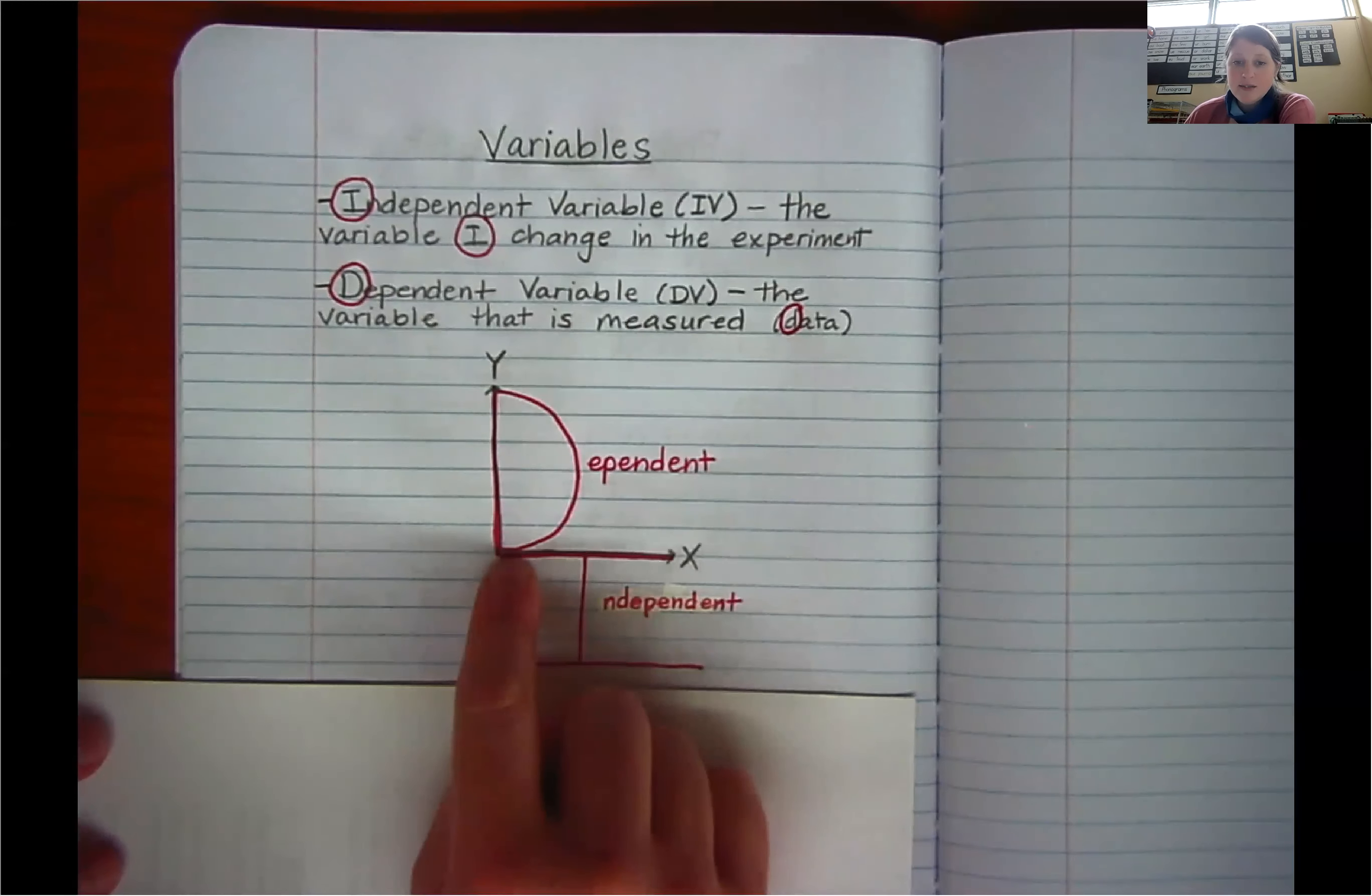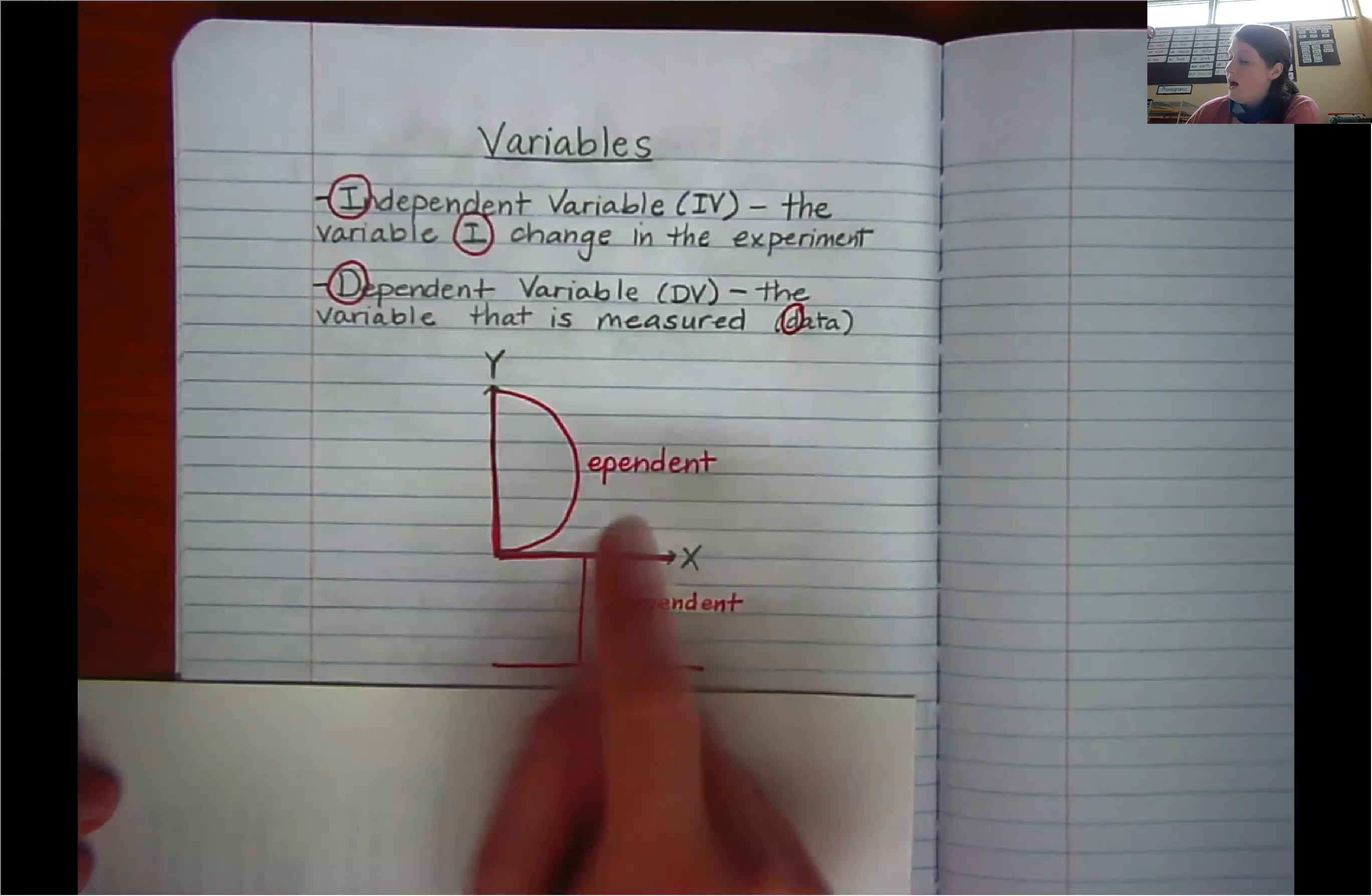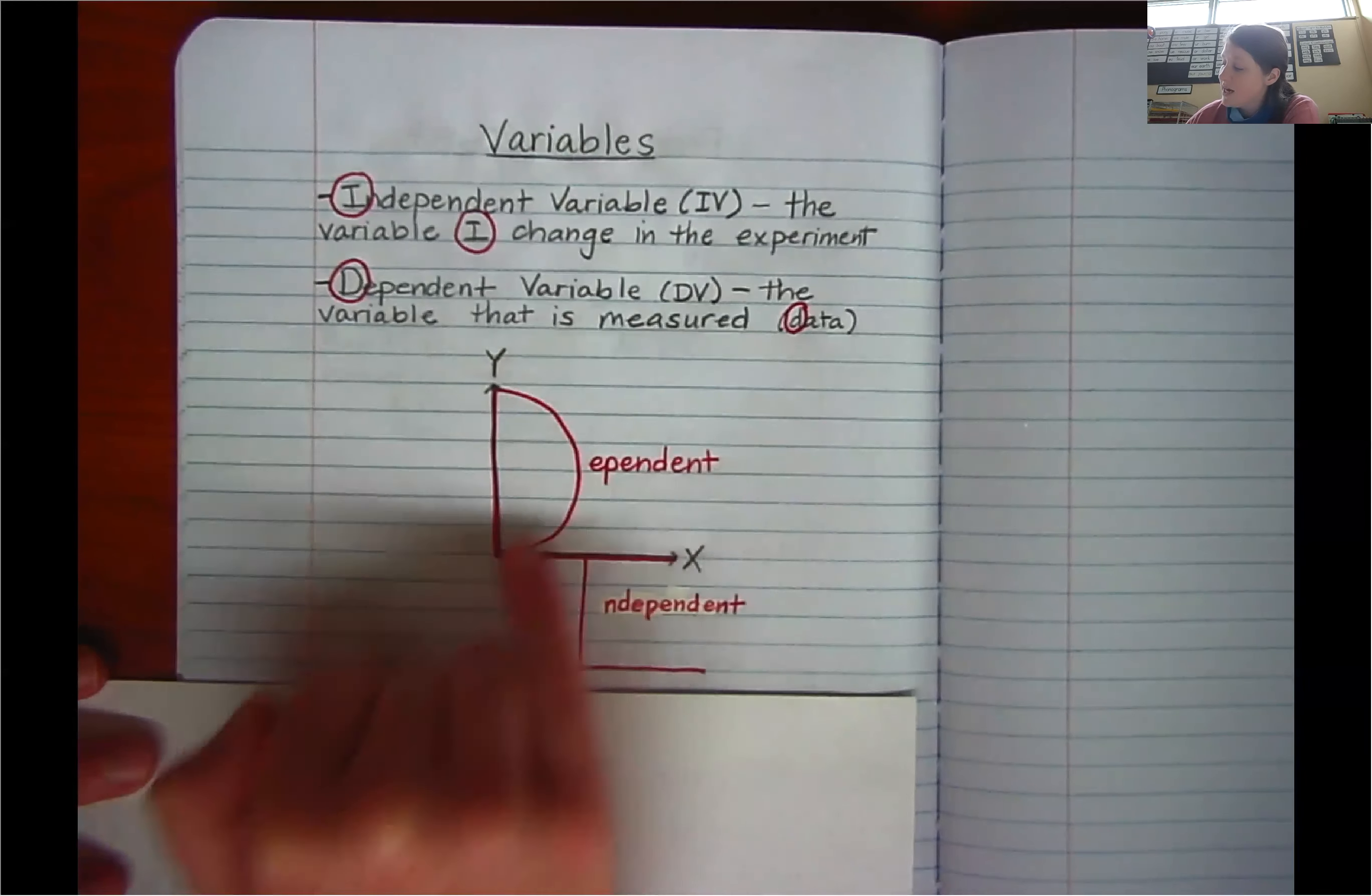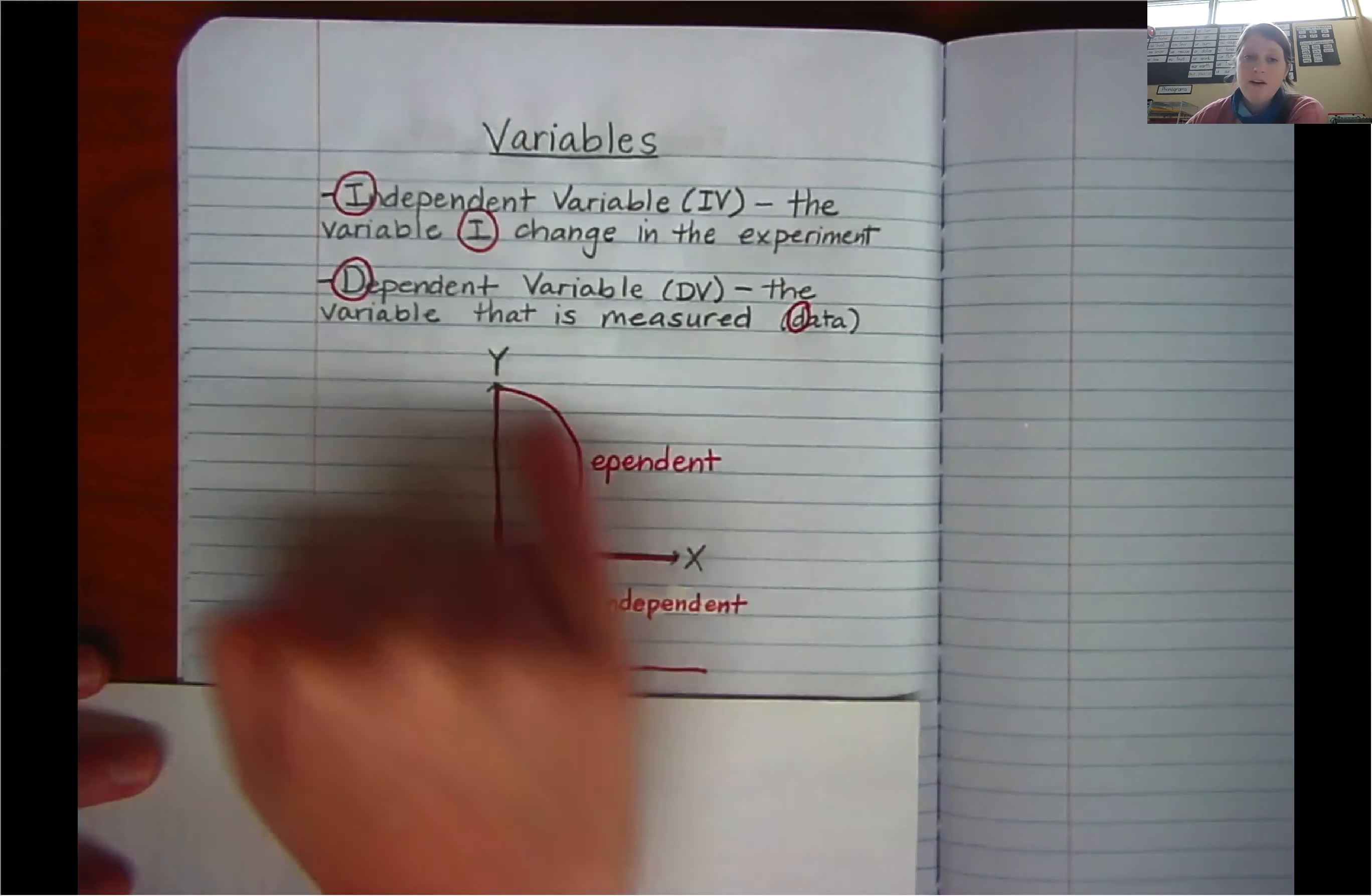The x-axis is going to be your independent variable. So if I were graphing my data about the plant growth from energy drink, the information about my energy drinks would be down here, probably amount of energy drink. Obviously the control would be on here too. And then the growth measurements would go up the side. That's the dependent variable. That's what we measure. So you'll see I can turn this into a capital I and I can turn this into a capital D. And that's how I remember the independent variable goes here and the dependent variable goes here.